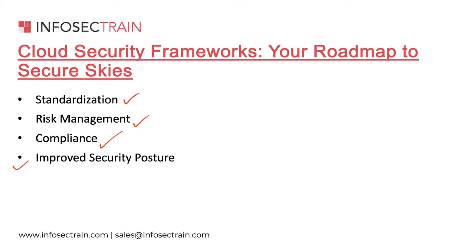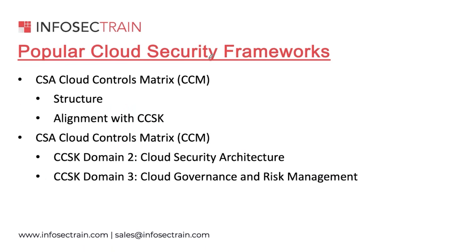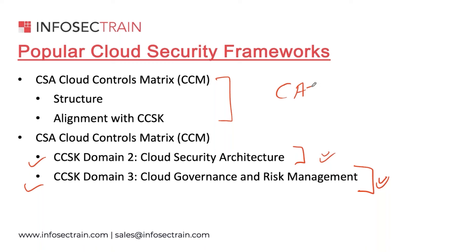In CCSK, domains two and three talk about cloud security architecture and cloud governance and risk management. With the CCM — the Cloud Control Matrix from the Cloud Security Alliance — it is a widely adopted framework that creates security controls based on different service models (IaaS, PaaS, SaaS) across different security domains including governance, risk management, and data security. The CCSK certification program covers cloud security knowledge mapped to all these domains.